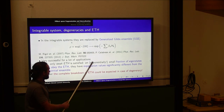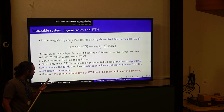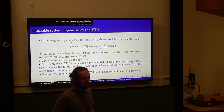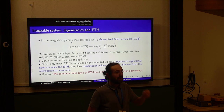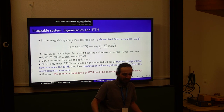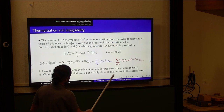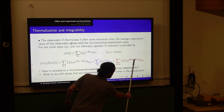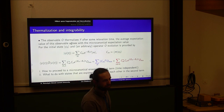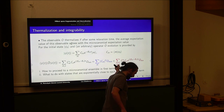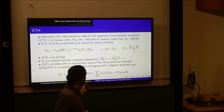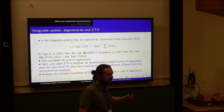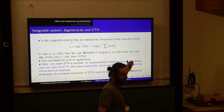Does everything thermalize? It turns out that some systems do not — and that is exactly what this talk is about. Systems with a large degeneracy do not thermalize. Already in the formula you can see that if different eigenstates have the same energy, something very unnatural appears. Our motivation for studying such systems is that the generalized Gibbs ensemble spectacularly fails, and there will be no thermalization.